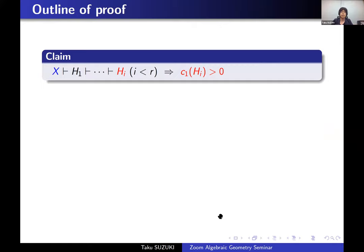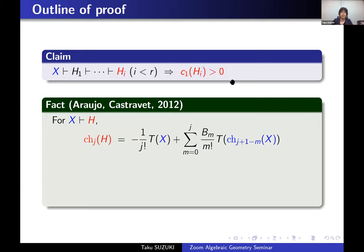Now I explain the outline of the proof of the main theorem. The claim is: if there is a chain of higher-order minimal families of length i smaller than R, then the last family Hi is also a Fano manifold — meaning its first Chern character is positive. If this claim can be proved, then we can extend the chain up to the R-th minimal family, obtaining that Nx is at least R. A key result by Araujo and Castravet gives a formula for the Chern characters of the minimal family Hi in terms of the Chern characters of X.